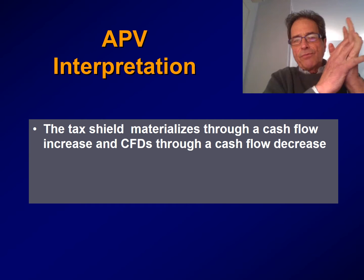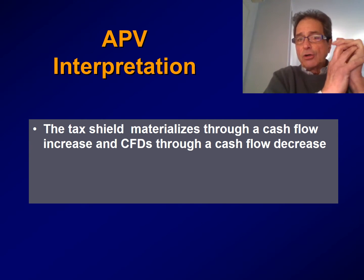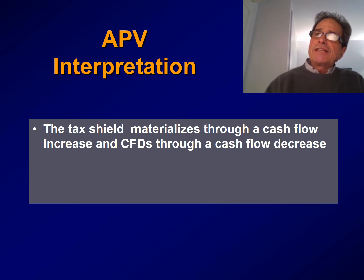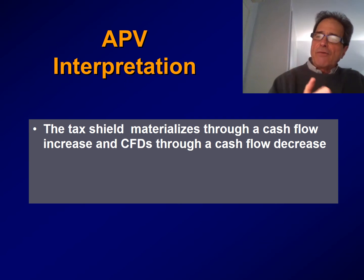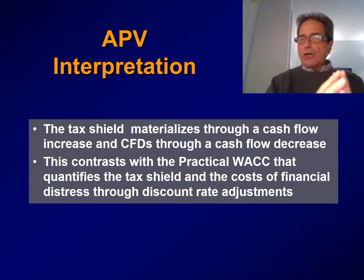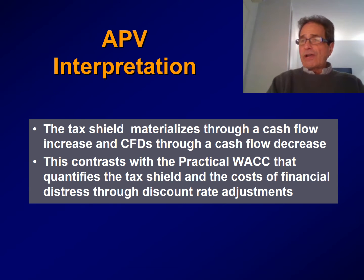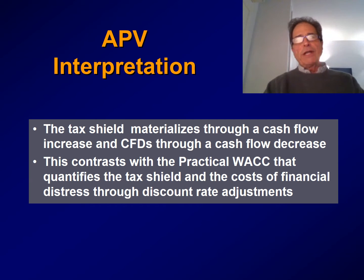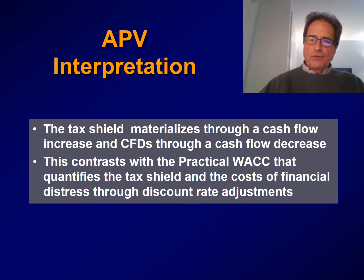Under the adjusted present value formula, the tax shield materializes through a cash flow increase, and also the cost of financial distress. You see that the tax shield is considered a cash flow, and also the cost of financial distress, and then we calculate the present value of each of them. This contrasts with the practical WACC approach, in which both these effects — the tax shield and the cost of financial distress — are incorporated into the discount rate and are not considered cash flow effects. They just modify the discount rate to account for these two elements.